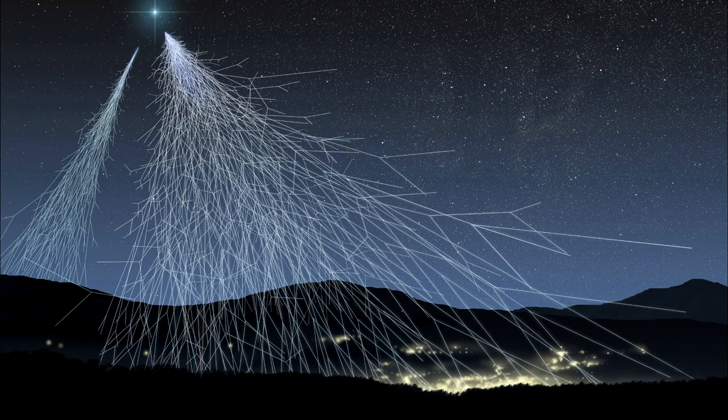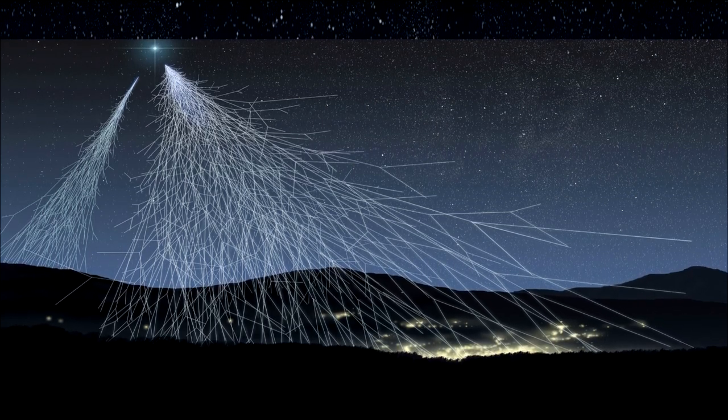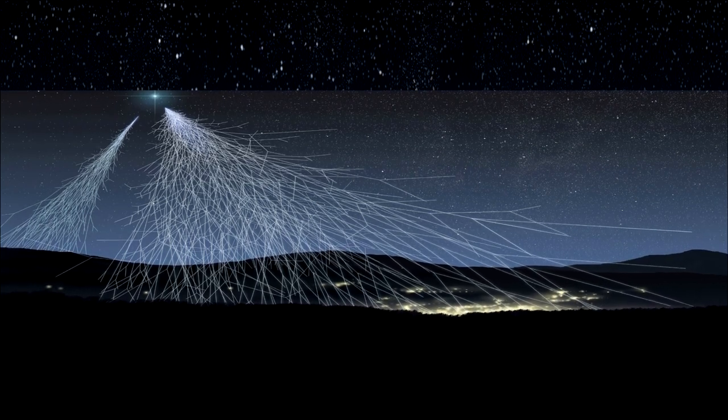But what does this look like in the muon's own reference frame, where it is standing still, and the Earth is approaching at 0.999986 times the speed of light? It will only last 2.2 microseconds. How will it make it to the surface?